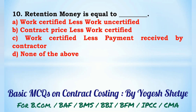Question 10: Retention money is equal to — (A) work certified less work uncertified, (B) contract price less work certified, (C) work certified less payment received by contractor, (D) none of the above. Retention money is equal to work certified less payment received by contractor. Answer: C.